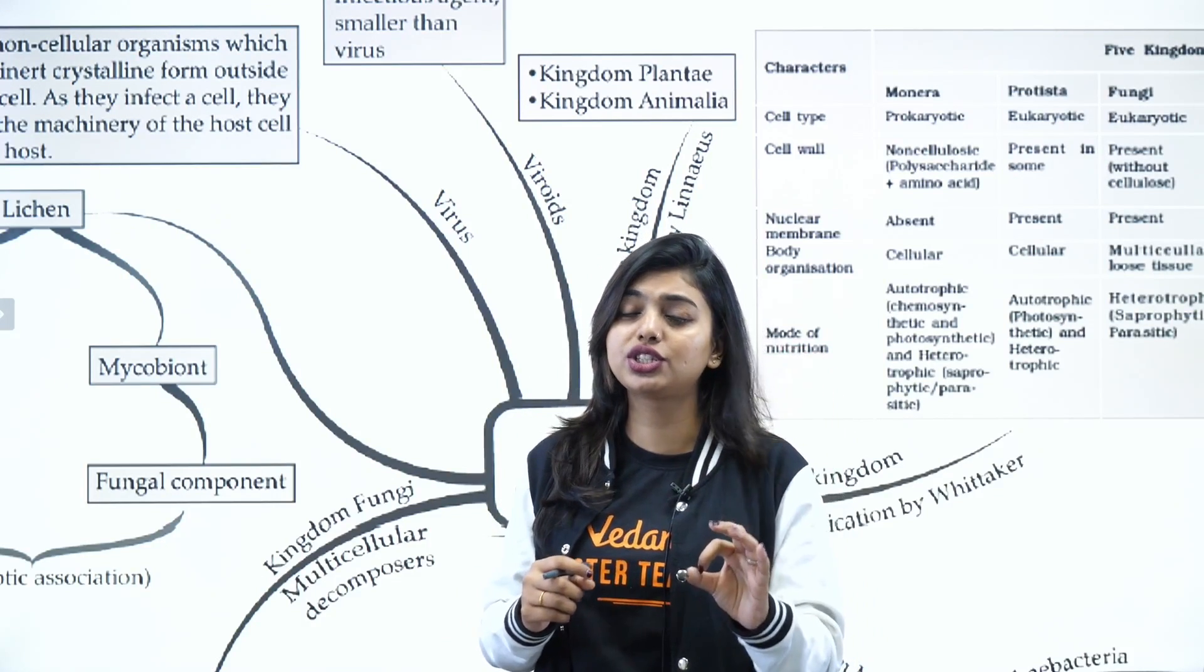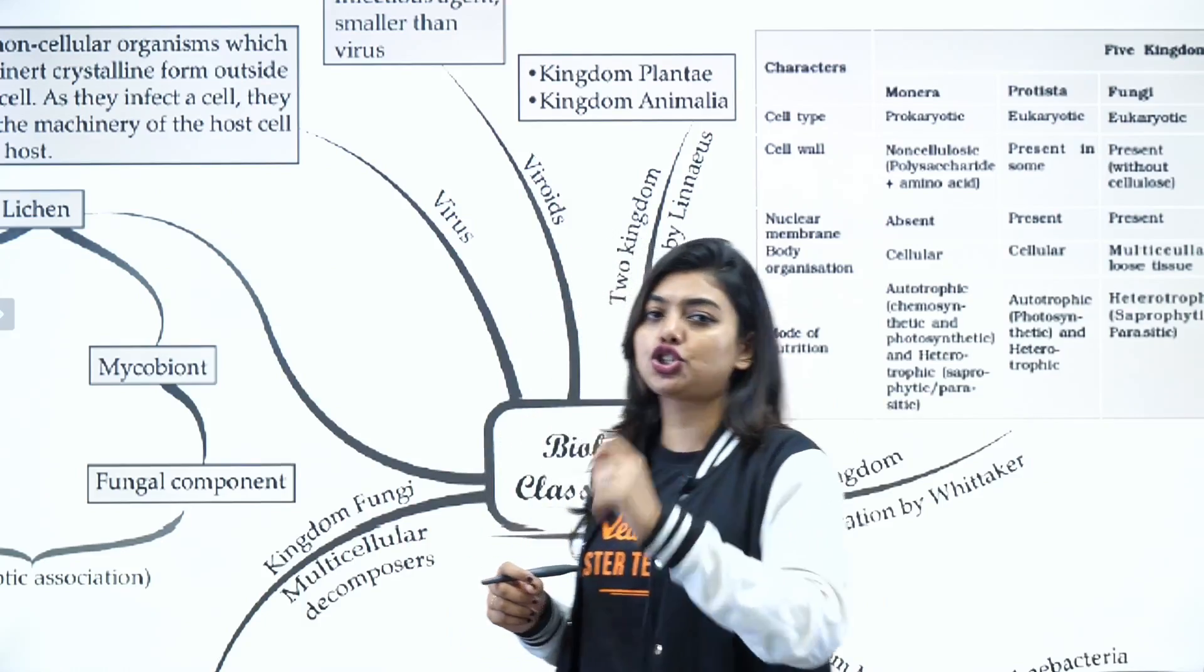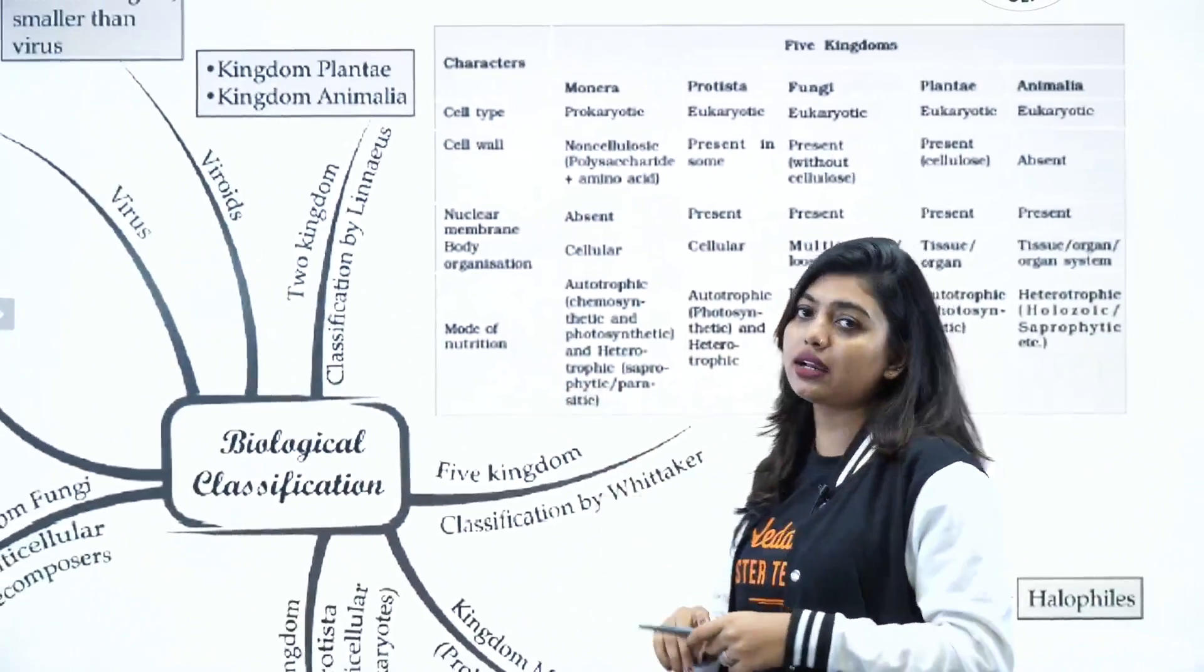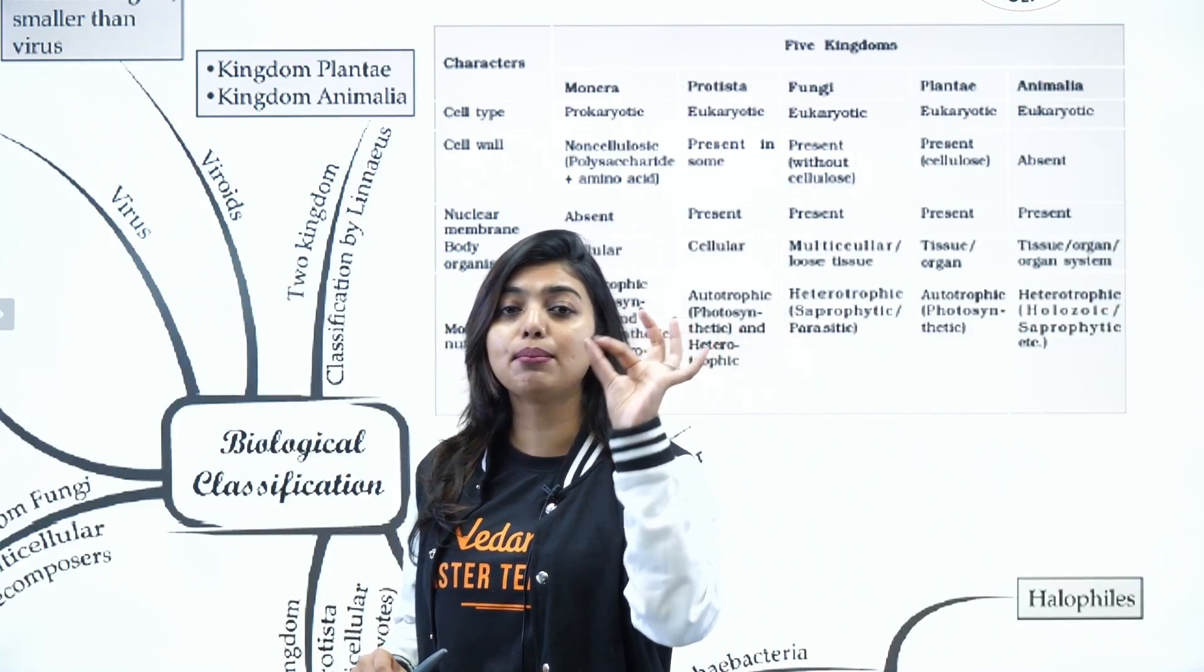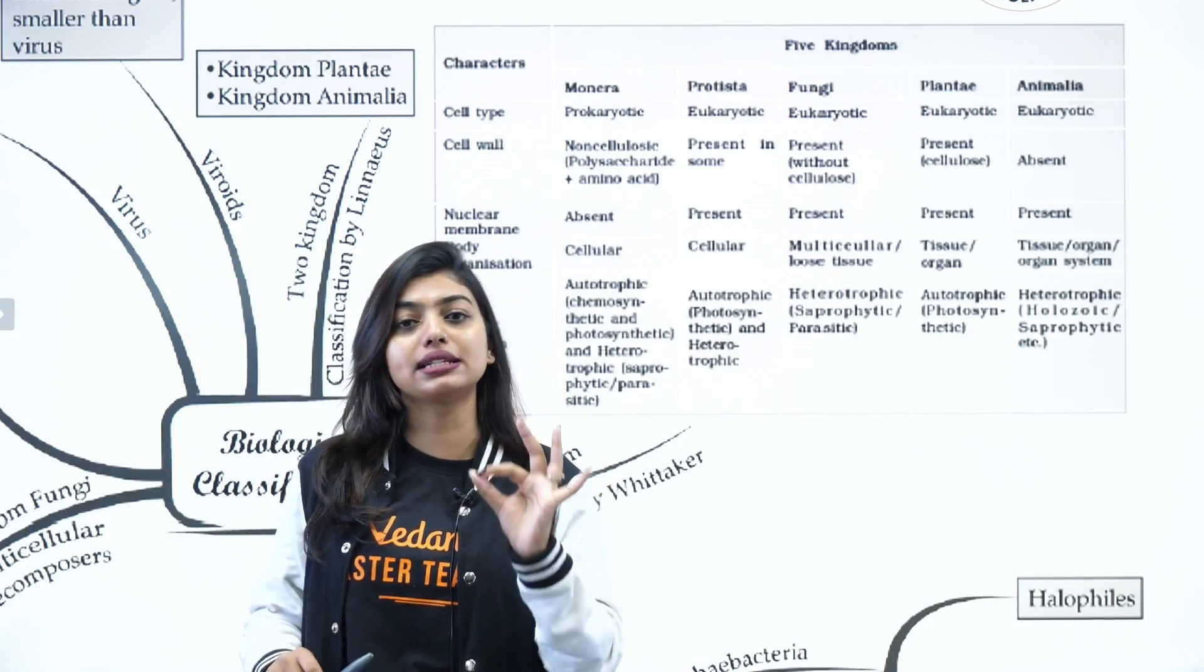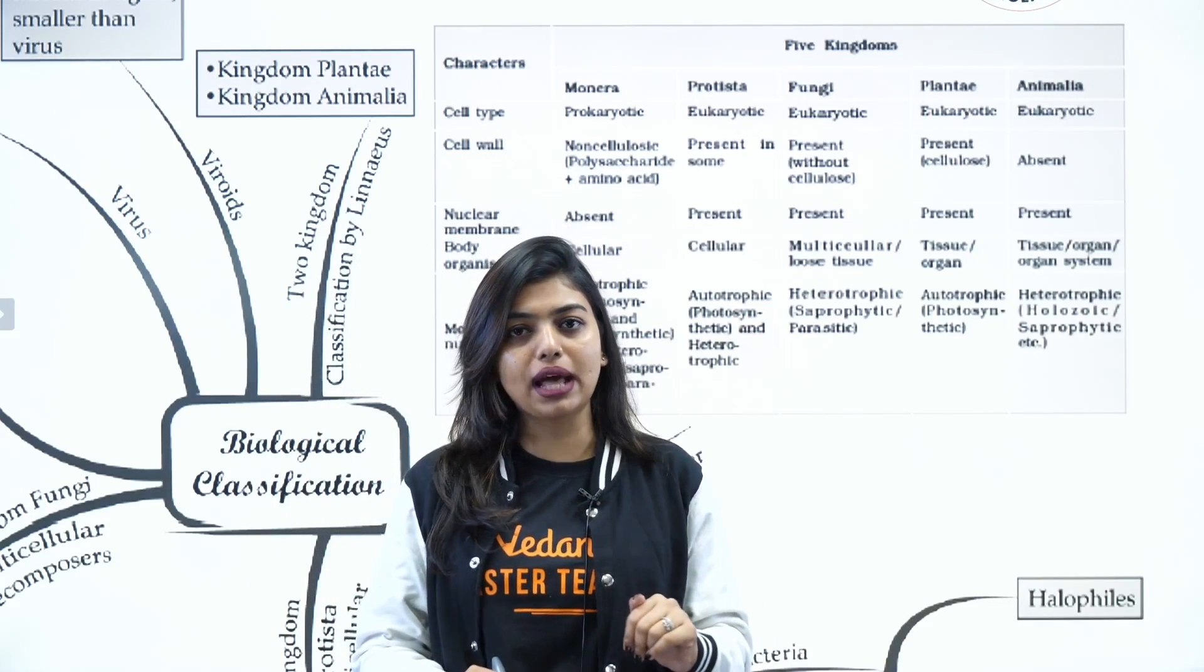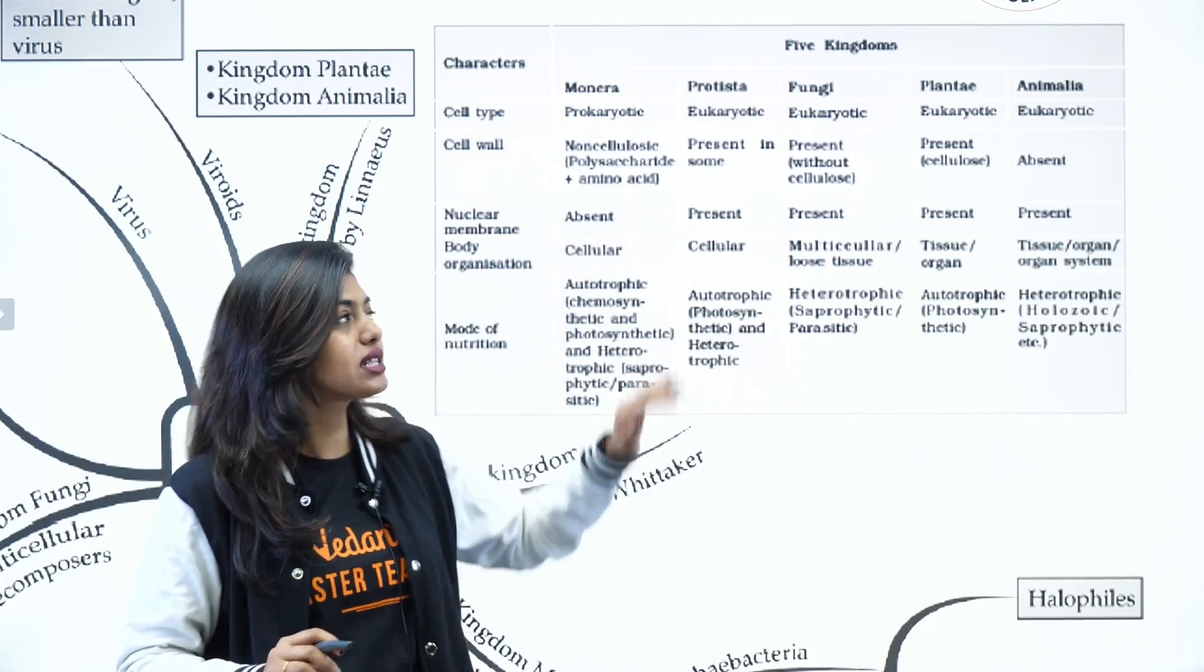So this classification also was rejected by all the botanists and zoologists, but it is important to learn the drawbacks. Then the most accepted classification was by R.H. Whittaker - that is your five kingdom classification: Kingdom Monera, Protista, Fungi, Plantae, and Animalia. Now in this classification, you do not have to learn any paragraphs, you only have to learn a box.